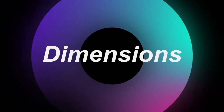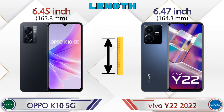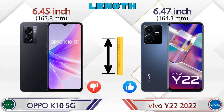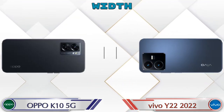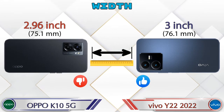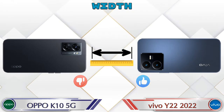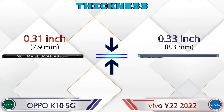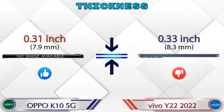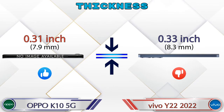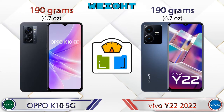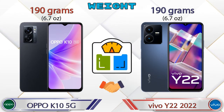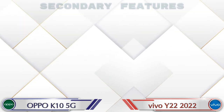Now let's check the dimensions. Length: the K10 5G is 6.45 inches and the Y22 is 6.47 inches. Width: the K10 5G is 2.96 inches and the Y22 is 3 inches. Thickness: the K10 5G is 0.31 inches and the Y22 is 0.33 inches, making the Y22 slightly thicker. The weight of both phones is 190 grams.